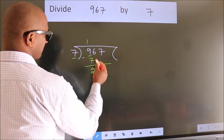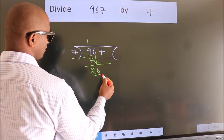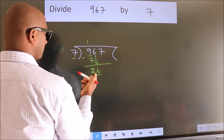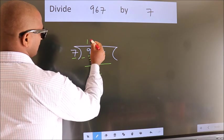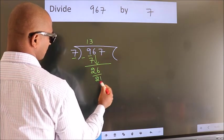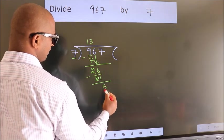After this, bring down the next number. So, 6 down, giving us 26. A number close to 26 in the 7 table is 7 threes, which is 21. Now we subtract. We get 5.